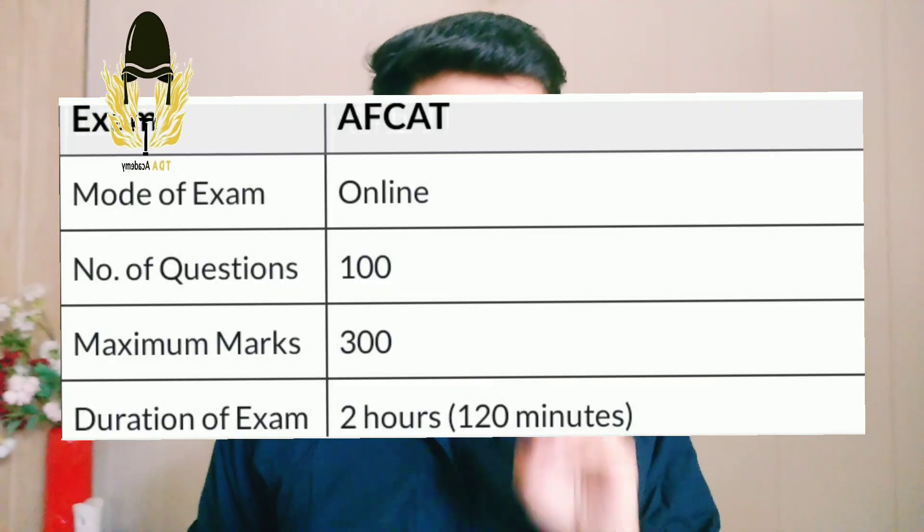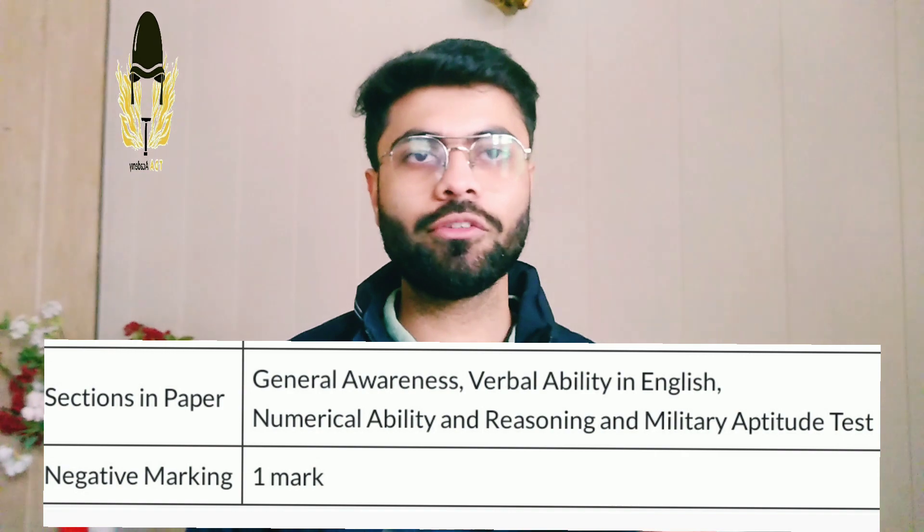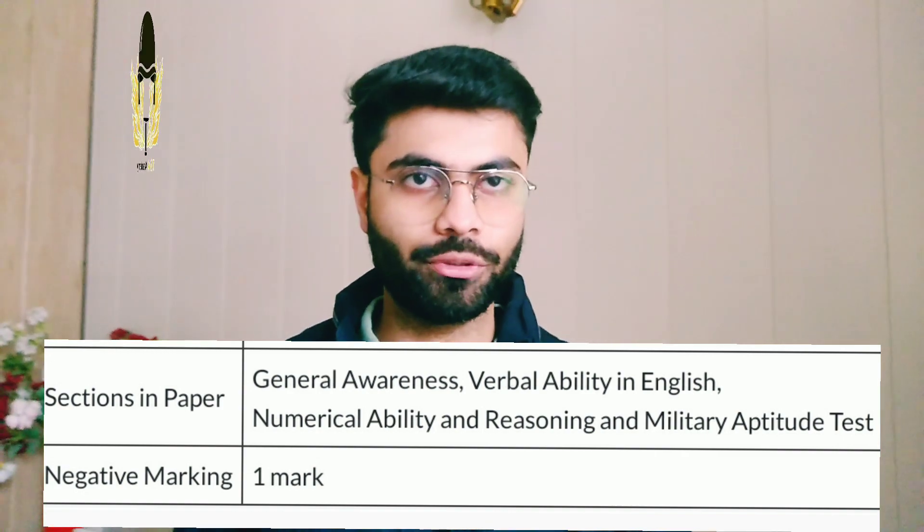Let us start with the pattern of the AFCAT examination. The AFCAT exam has 100 questions. It is an online exam where you are given 2 hours. The marking scheme is plus 3 or minus 1, and this paper is of 300 marks. In mathematics, you will be asked about 18 to 20 questions.